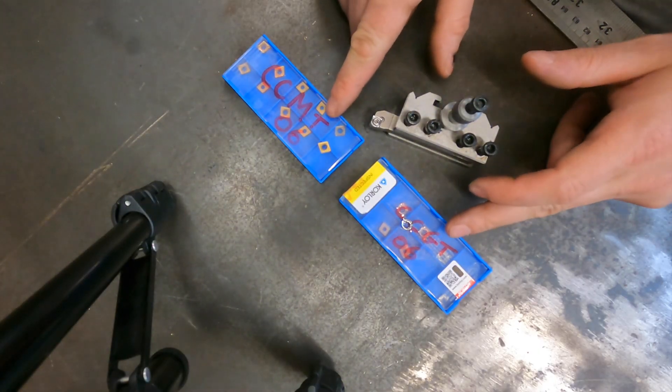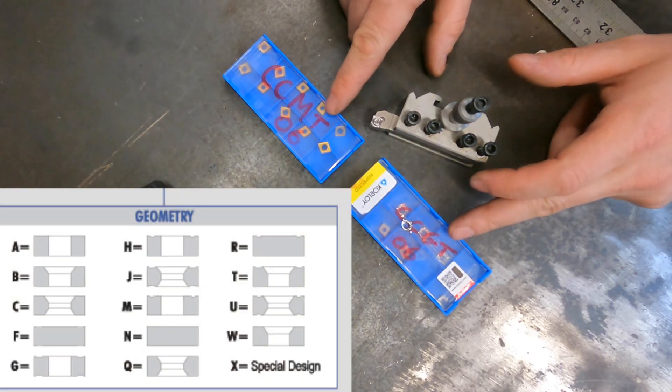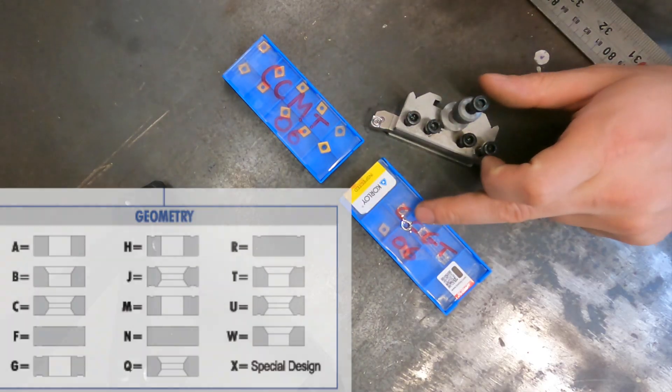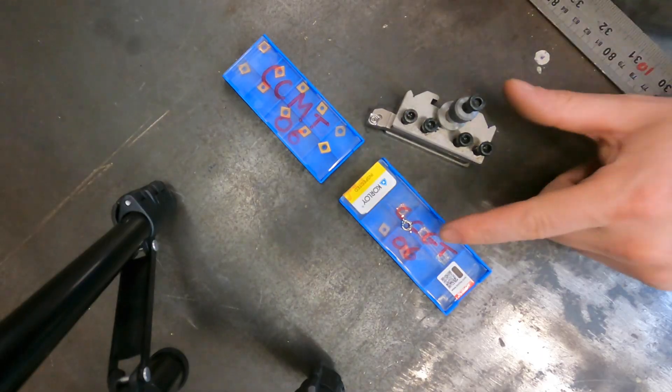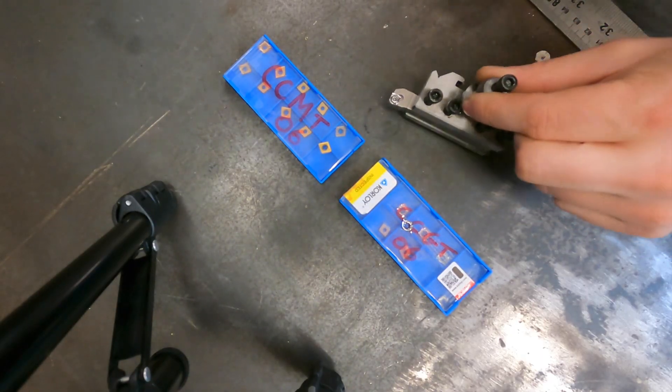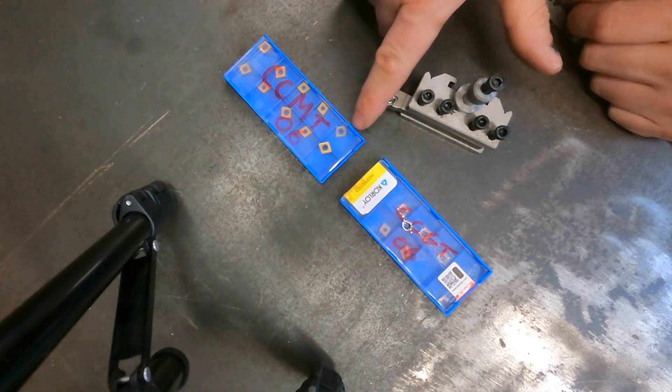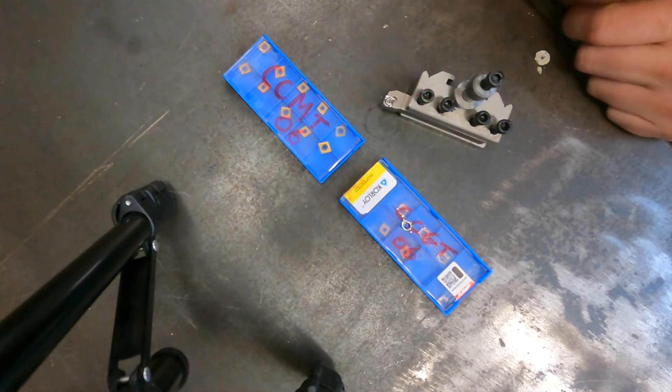Let's just finish off with the final letter T which both these share in common, and that just dictates the countersunk hole. The countersunk hole where these bolt to the tool is exactly the same, so both these inserts can be used on the same tool, which is going to make today's test really interesting because we can directly compare the CCMT and the CCGT and see which one gives a better cut.